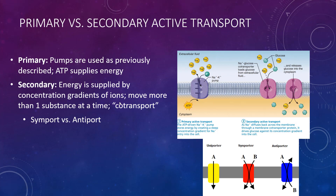Secondary active transport is a little bit different — it still requires energy but not in the form of ATP. The energy is supplied by concentration gradients of other ions, and more than one substance moves at a time. We call this co-transport. In this example, glucose is moving along with sodium through this transporter — glucose is hanging on and going along for the ride. This would be called a symporter example of secondary active transport. Glucose is relying on that concentration gradient of sodium to help get it across, with no ATP involved. It's symport because they're moving in the same direction.